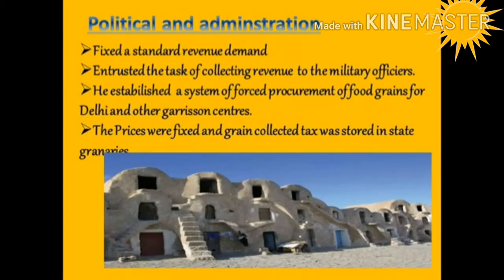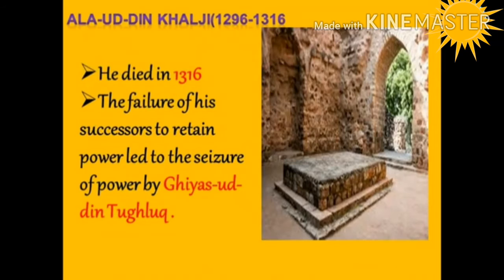Alauddin's political and administrative reforms were as impressive as his military conquests. He undertook a survey of agrarian resources around his capital and fixed a standard revenue demand, entrusting revenue collection to military officers — depriving local chiefs and rajas of their traditional privileges. He also established a system of forced procurement of food grains for Delhi, fixed procurement prices, and stored grain in state granaries. He employed spies to report to him directly. Alauddin died in 1316.